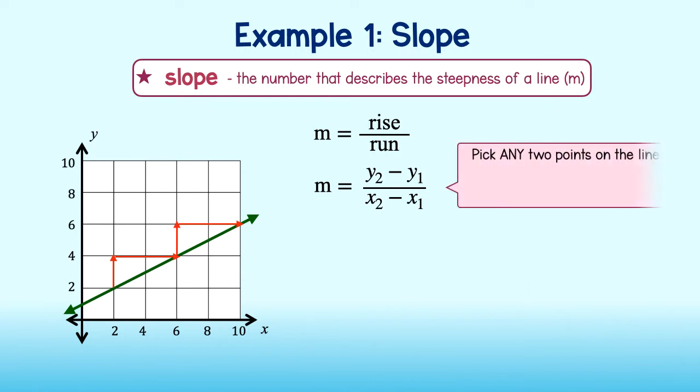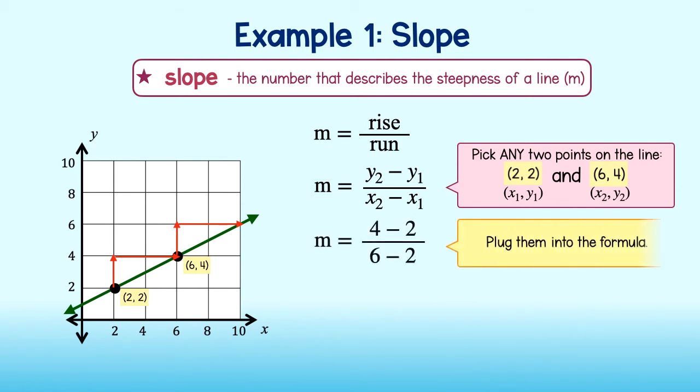To use the formula, we pick any two points. Any two points from the graph will do. We will pick 2, 2 and 6, 4. Now, remember each of these is just an ordered pair and in each ordered pair there's an x and a y. There are two points so we can think of the first point as having the first x and y, x1 and y1 and the second point as having the second x and y or x2 y2. We then plug these numbers into our formula. 4 minus 2 is 2 and 6 minus 2 is 4. We can simplify this reducing this fraction to one half. Our slope or m is one half.